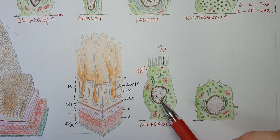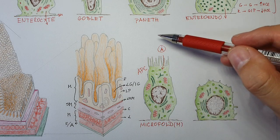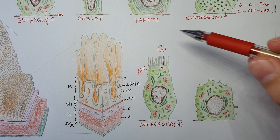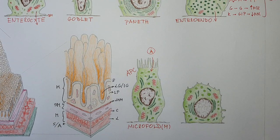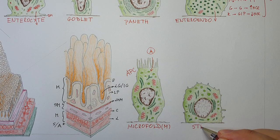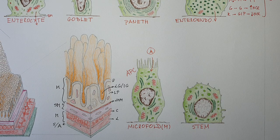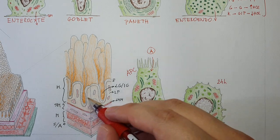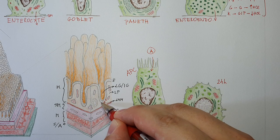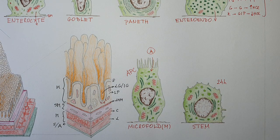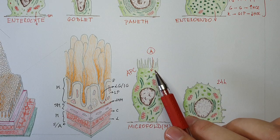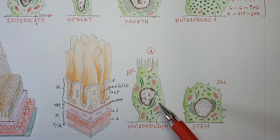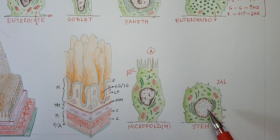These microfold cells regulate the immune response to antigens present in the gut lumen. Last are stem cells — undifferentiated cells that live a short life of 24 hours and are present at the base of the Lieberkühn glands. These cells enable renewal of all the epithelial cells, serving as a self-renewal mechanism for the simple columnar epithelium of the gut.